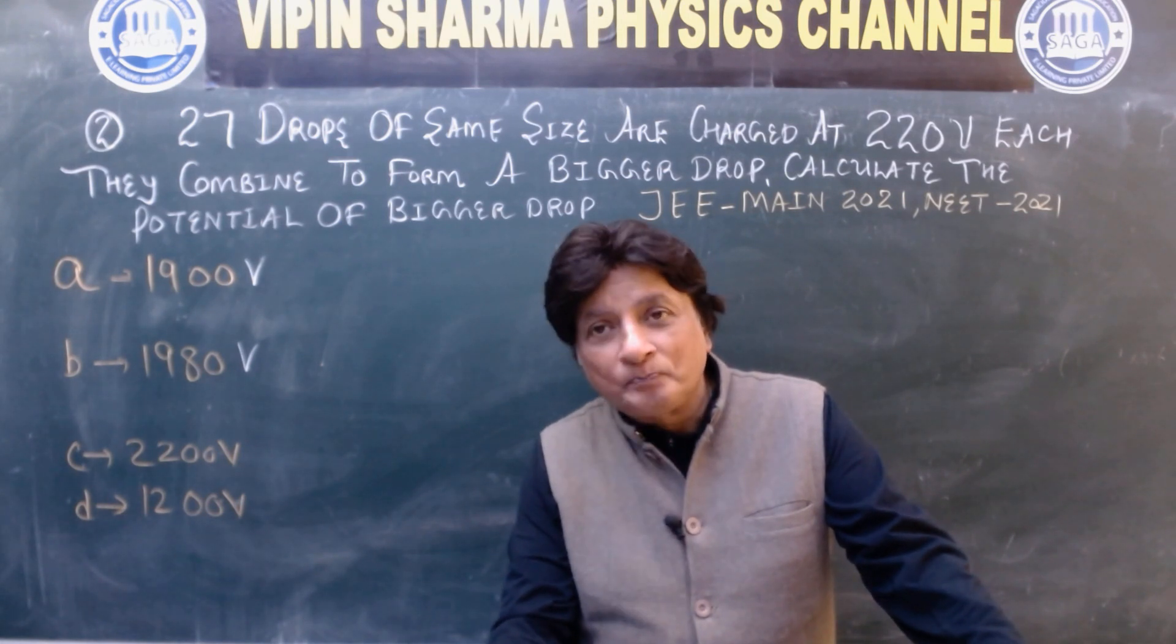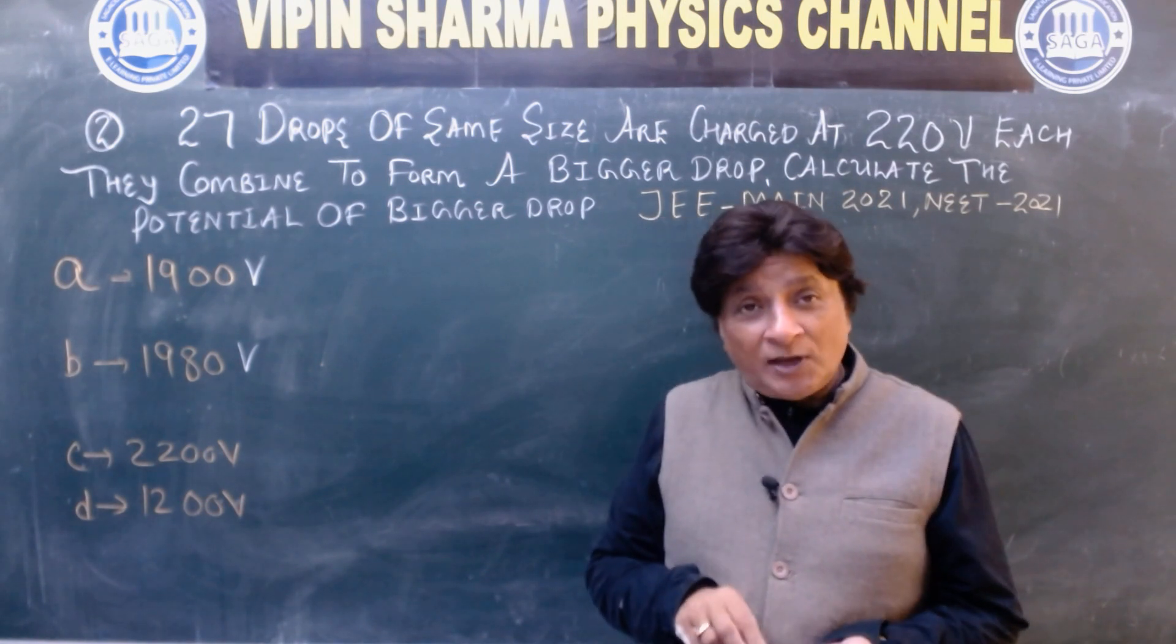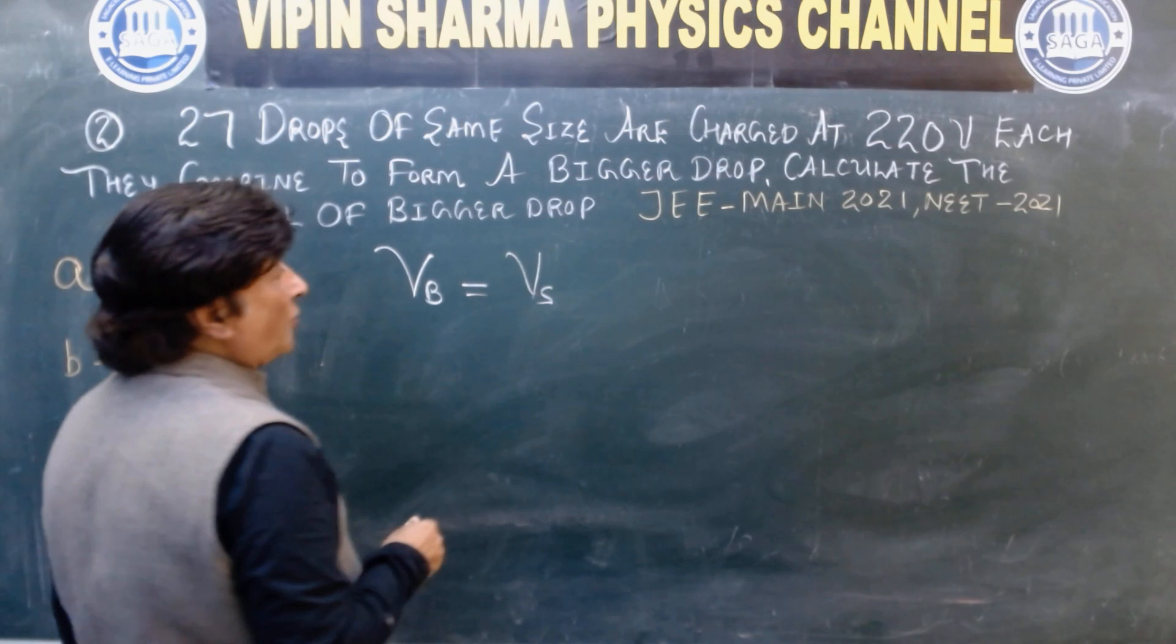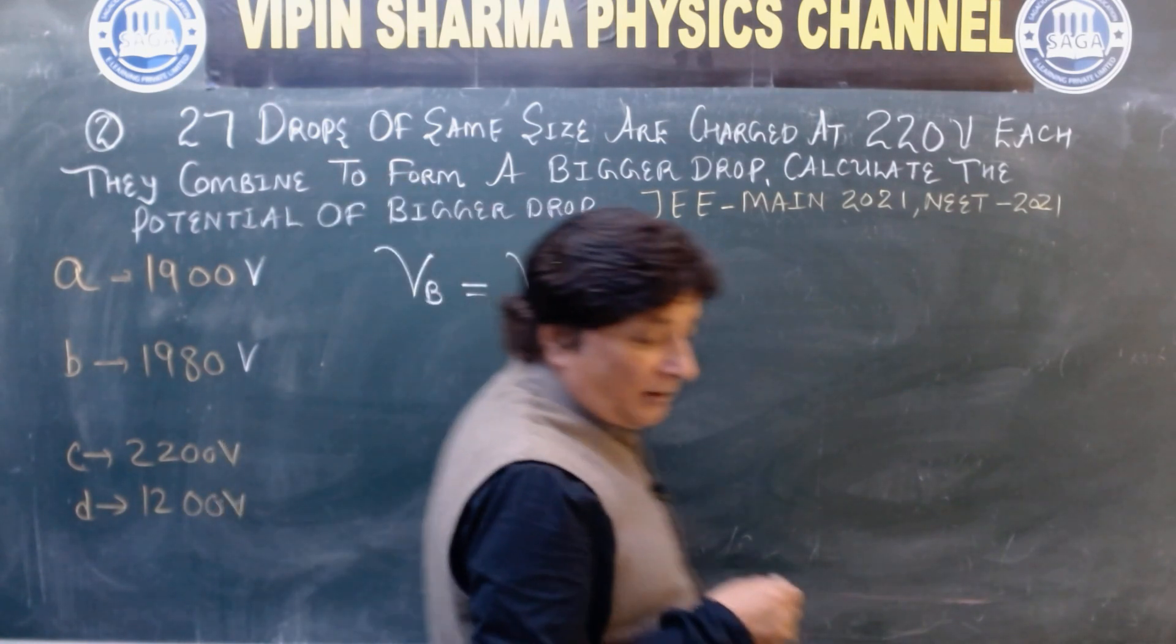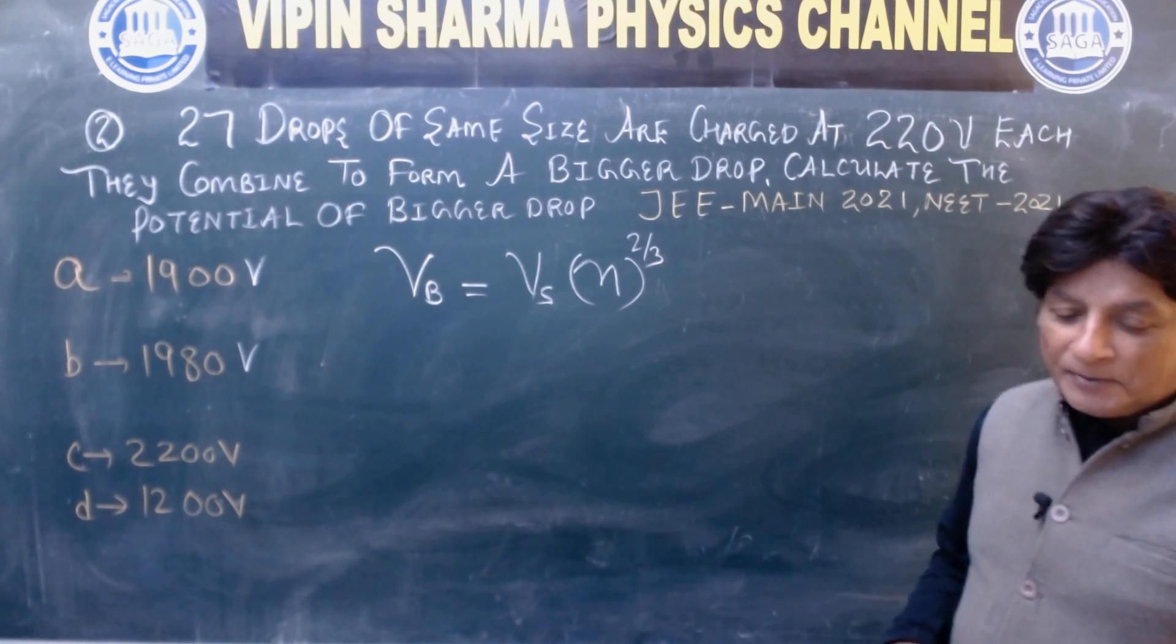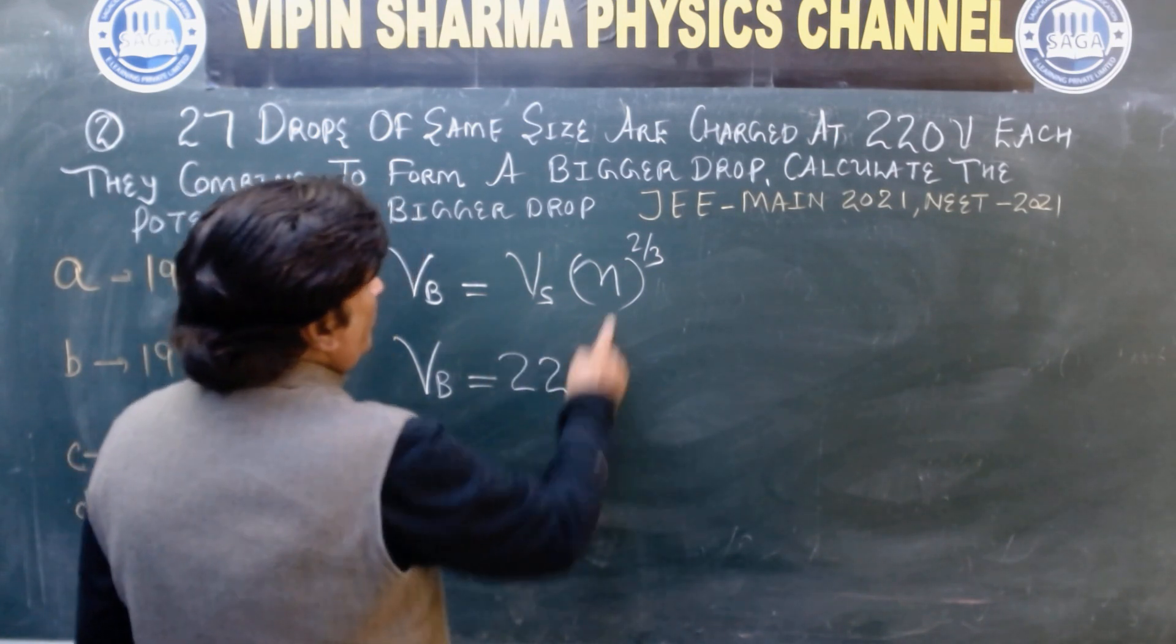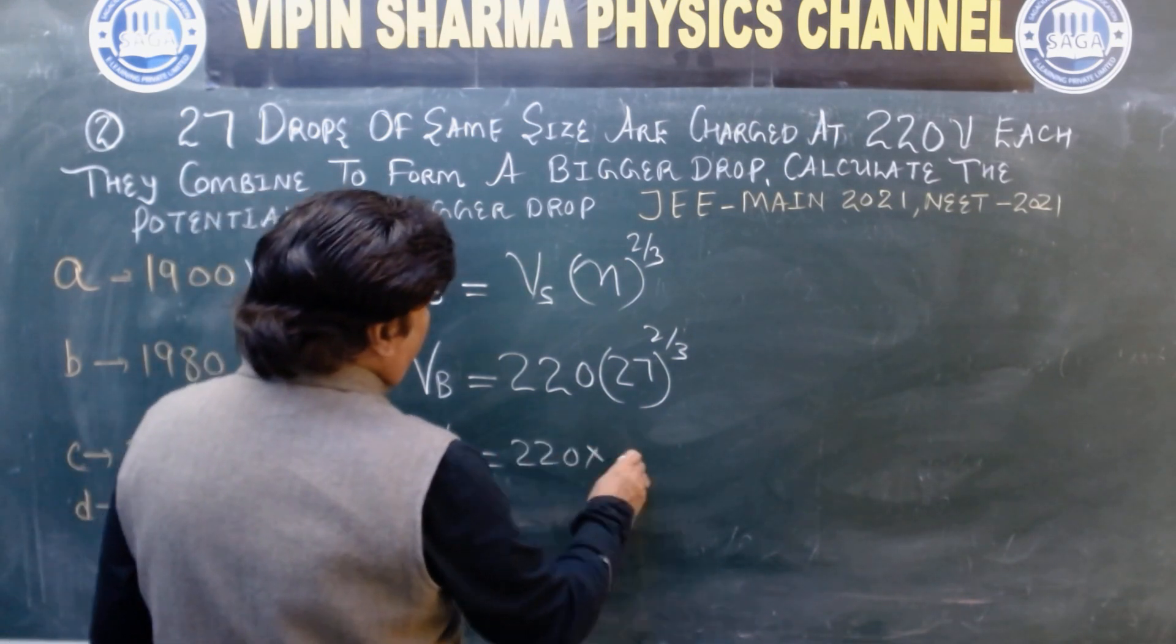I am going to solve it. Potential of bigger drop equals potential of smaller drop into n, where n is total number of drops, to raise power 2 by 3. The potential of smaller drop is 220, drops are 27, to raise power 2 by 3.